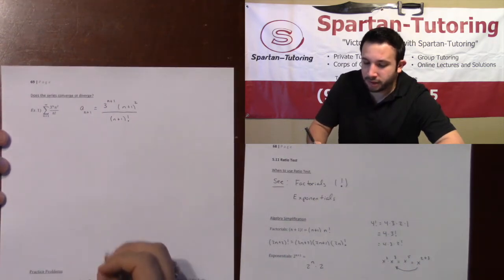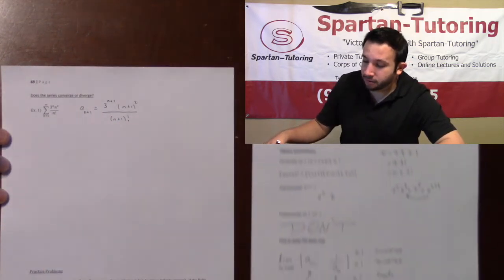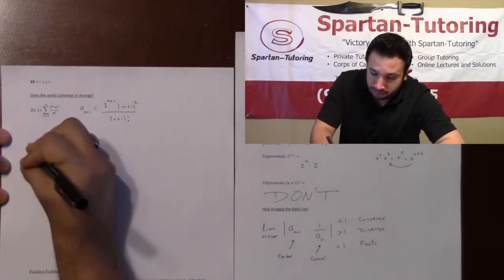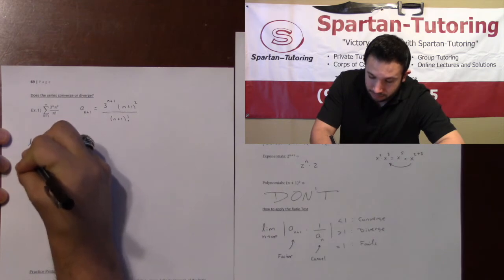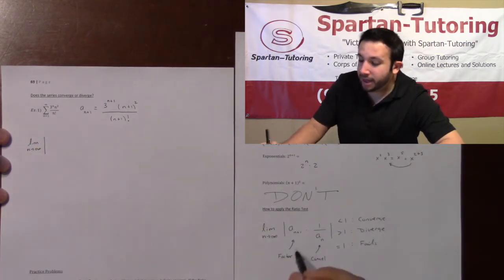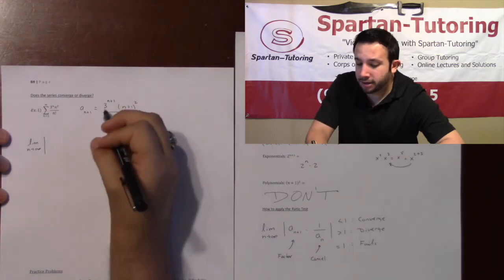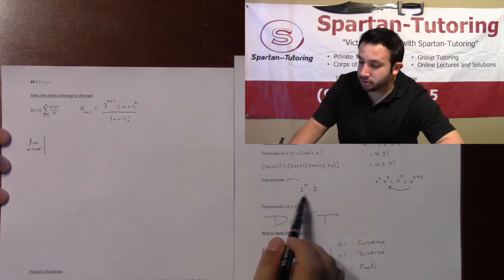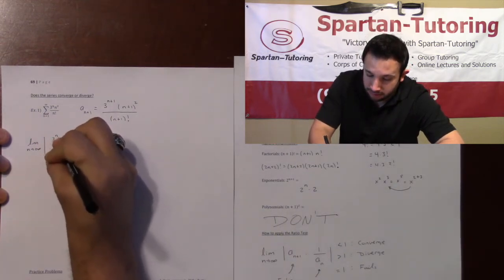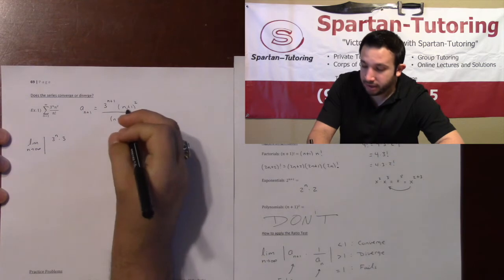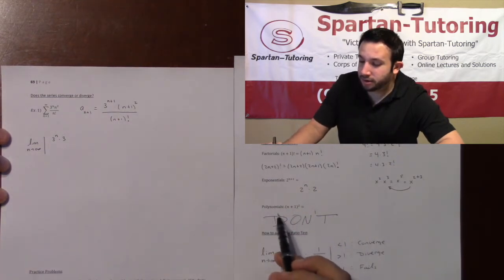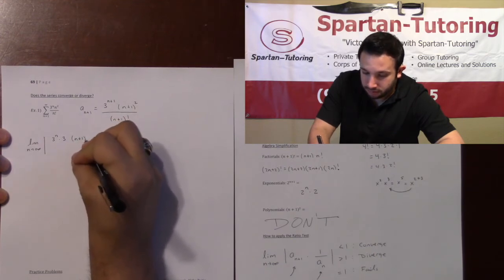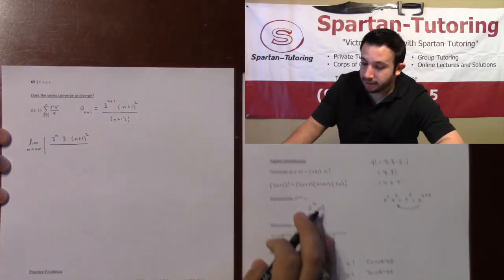Okay, so now that we have that, let's go ahead and apply the ratio test. And my ratio test said it's going to take the limit as n goes to infinity of my a_n plus 1. So let's go ahead and factor this. This 3 to the n plus 1—that's an exponential—I can split it up into 3 to the n times 3.